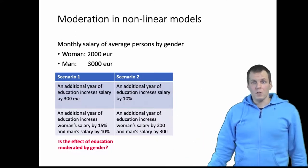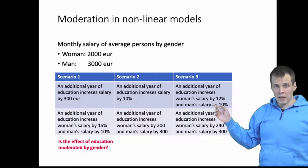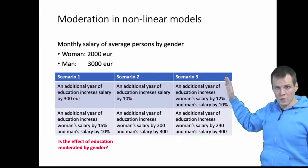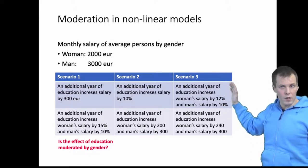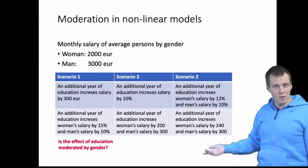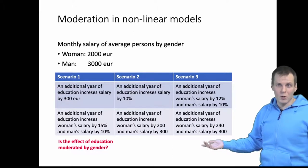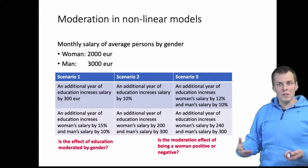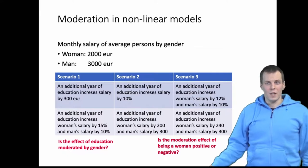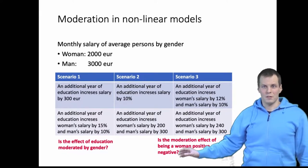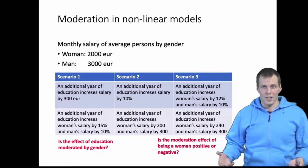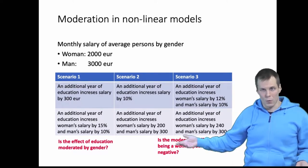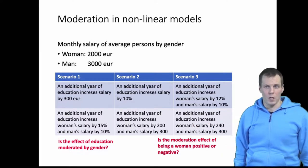There is a third scenario where an additional year of education increases a woman's salary by 12% and a man's salary by 10%. So in relative terms the woman's salary increases more per year of education, but in absolute terms the woman's salary increases less. So is the moderating effect of gender positive or negative in this scenario? It depends on what we want to say with the data. The better way is just to explain what the effect is like instead of trying to say it's either negative or positive.